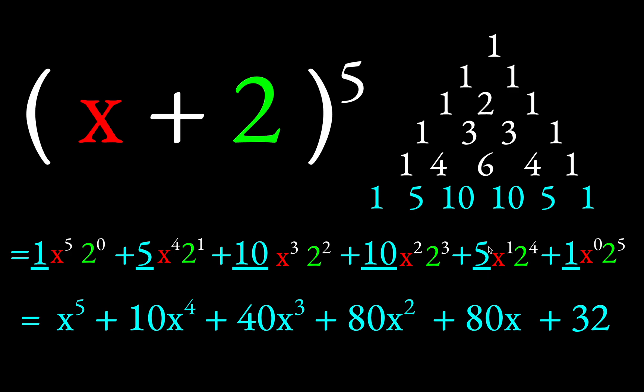In this term, you get another 80 because you have 5 times 2 to the fourth. Well, 2 to the fourth is 16. So 16 times 5 will give you 80. And then finally, we get a 32 because that's 2 to the fifth.